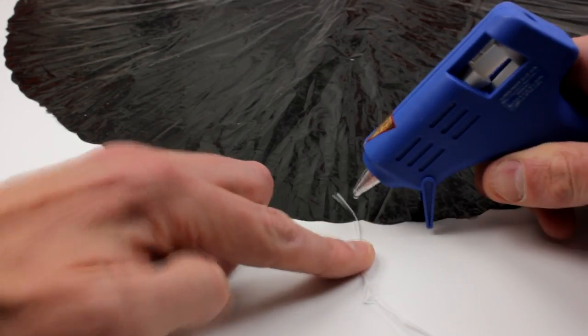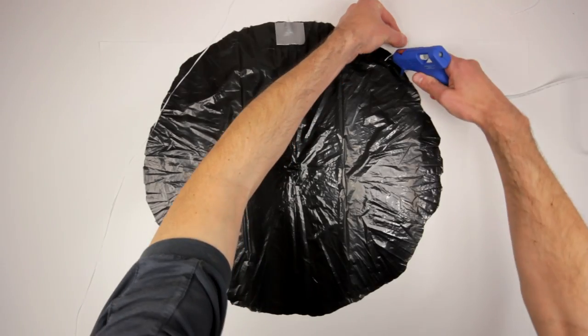Use floss or string to make the parachute lines. Hot glue them, then add some duct tape to strengthen the joint.